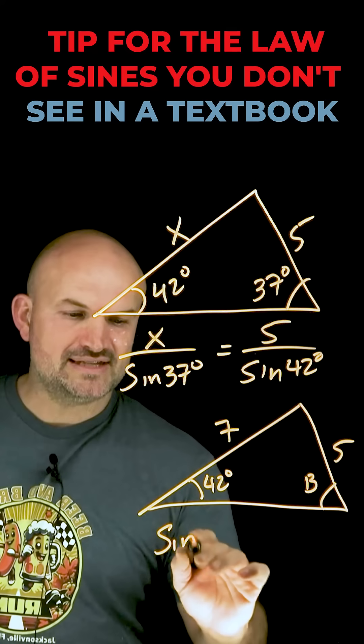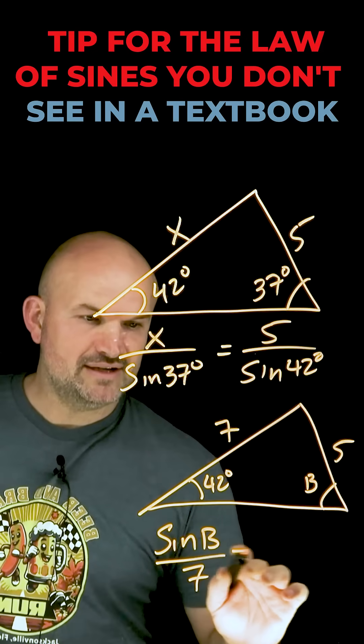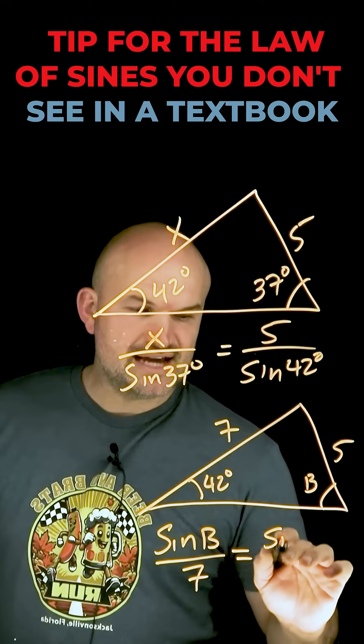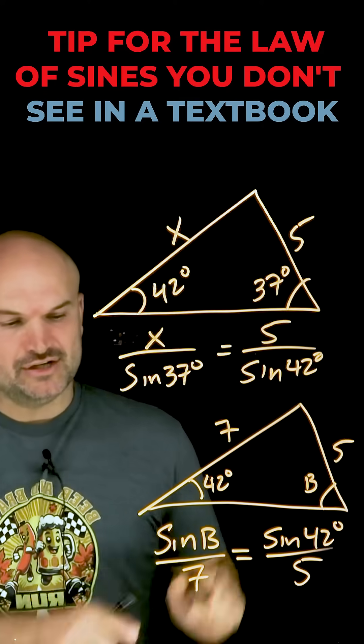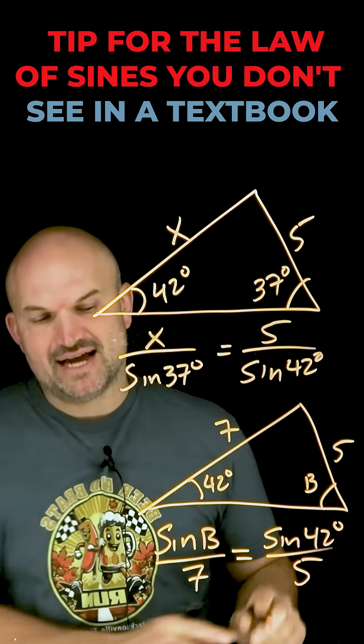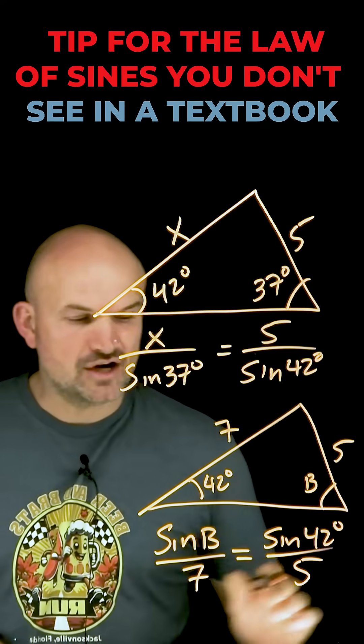So in this case, I would just have the sine of b over 7 is equal to the sine of 42 degrees over 5. Now all I simply need to do is multiply by 7 on both sides and take the sine inverse, and I can solve for b.